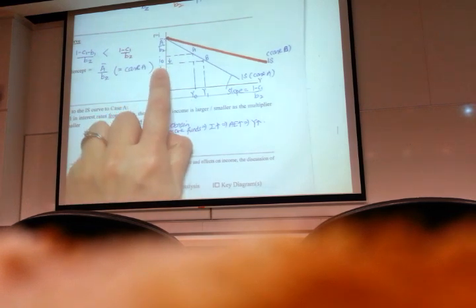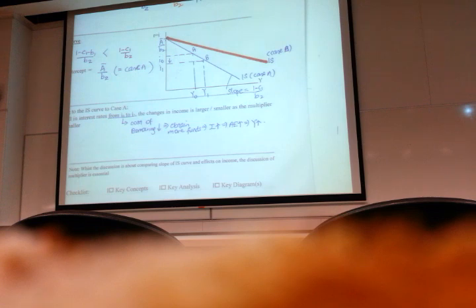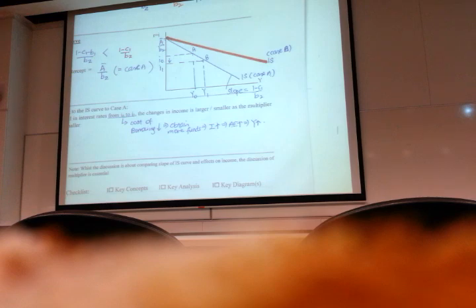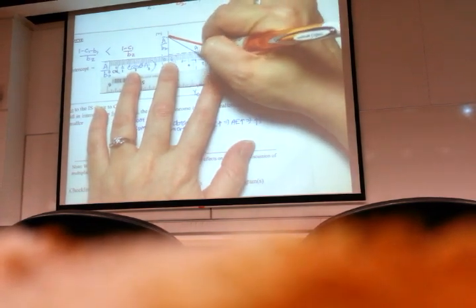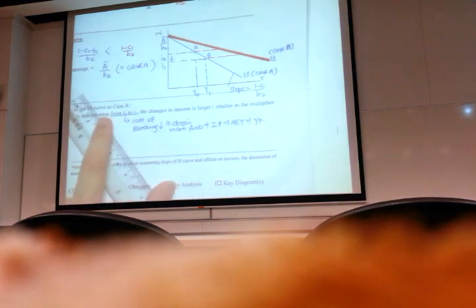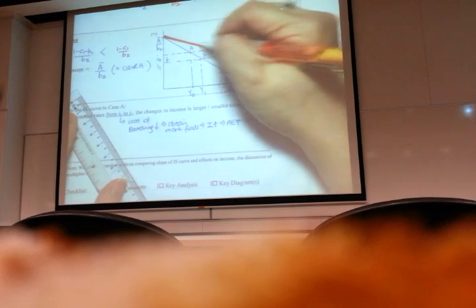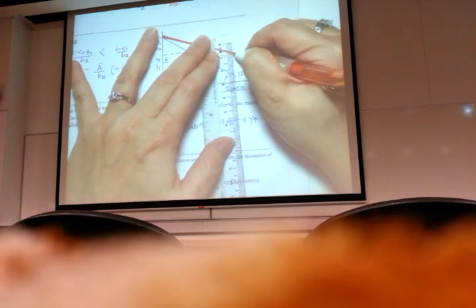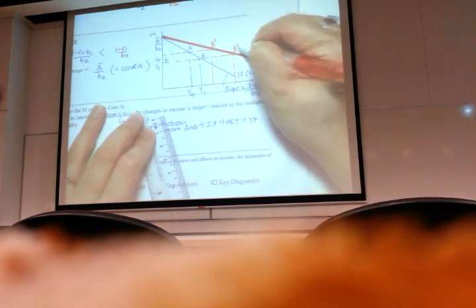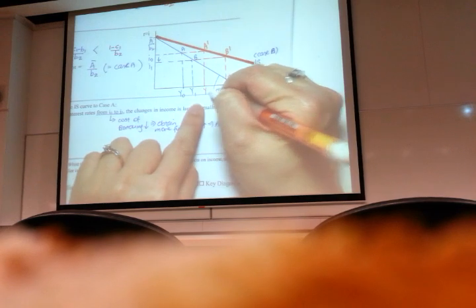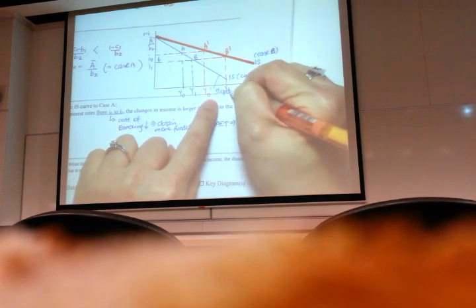So in this case, you could see if this is on the standard IS, it would be Y not to Y1. But now, if you have the flatter IS, extend the line, point A prime, point B prime. So use a different color to show. Same drop in interest rates, then now you have Y not prime, Y1 prime.